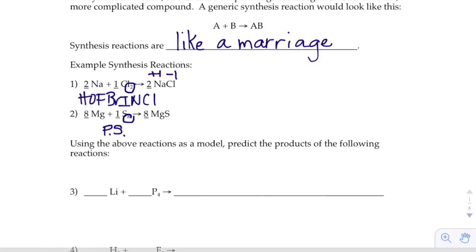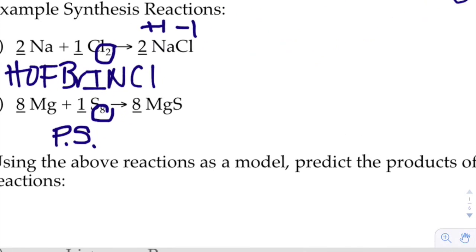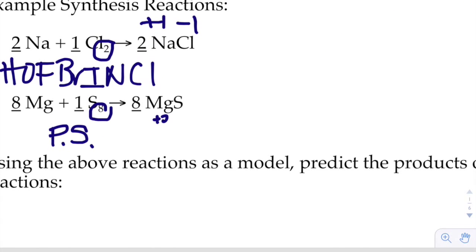Well, on the right hand side, sulfur is not by itself anymore. It's with magnesium. And when you put magnesium and sulfur together, if you check the charges of magnesium and sulfur, magnesium's plus two and sulfur's minus two. So plus two minus two, it's just MgS.